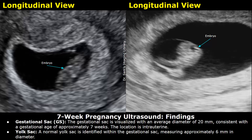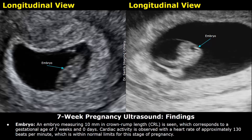Yolk sac: a normal yolk sac is identified within the gestational sac, measuring approximately 6 mm in diameter. Embryo: an embryo measuring 10 mm in crown length is seen, which corresponds to a gestational age of 7 weeks and 0 days. Cardiac activity is observed with a heart rate of approximately 130 beats per minute, which is within normal limits for this stage of pregnancy.